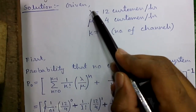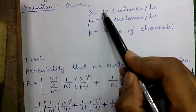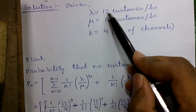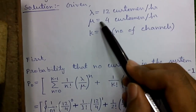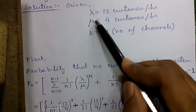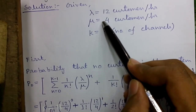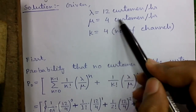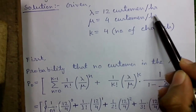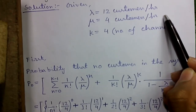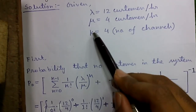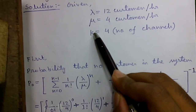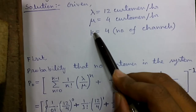Given: lambda (rate of arrival) = 12 customers per hour. Mu (mean service rate) = 4 customers per hour, since it takes 15 minutes to service a customer on average. k = 4 service counters, that is, number of channels.